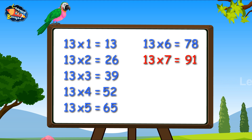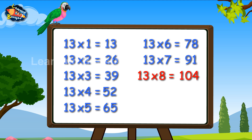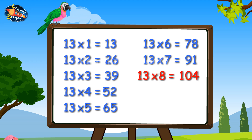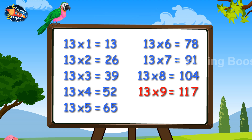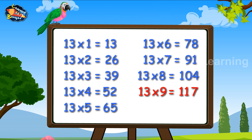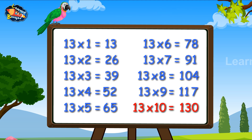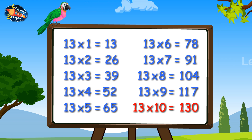Thirteen sixes are seventy-eight. Thirteen sevens are ninety-one. Thirteen eights are one hundred and four. Thirteen nines are one hundred and seventeen. Thirteen tens are one hundred and thirty.